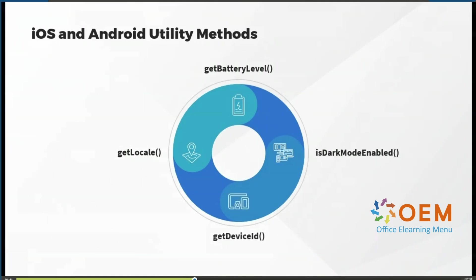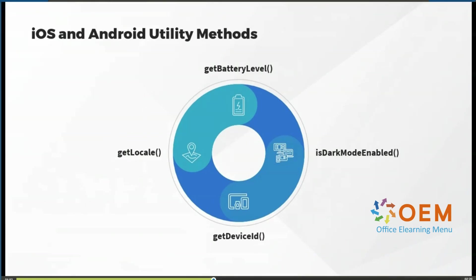Another useful method is get_device_id, which enables us to retrieve the unique device identifier, also known as UDID. This is extremely useful to distinguish between different devices that are communicating with each other in a testing lab environment.